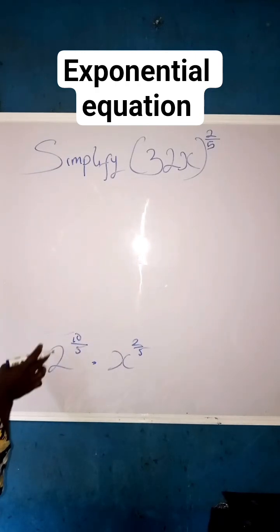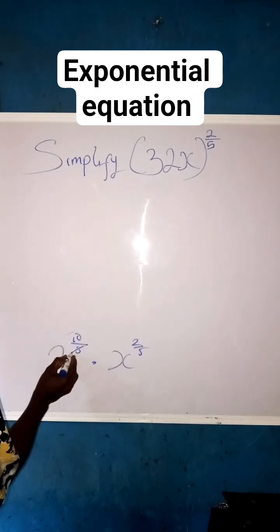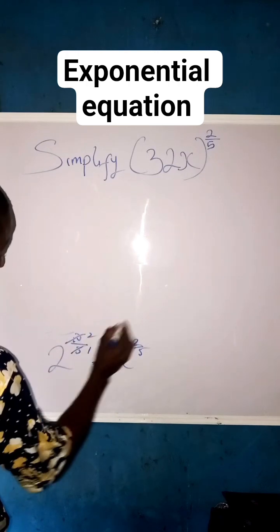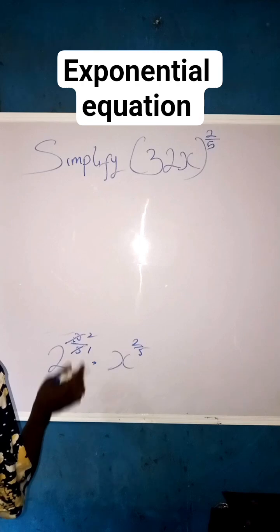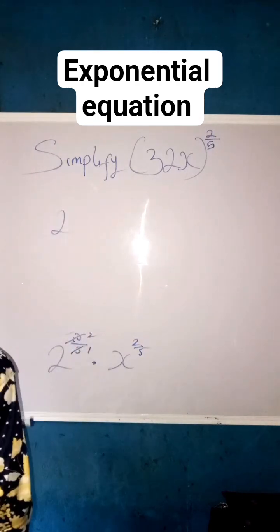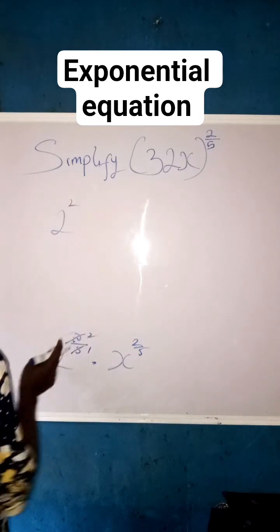We are going to have, remember this is 2 raised to power 10 all over 5. 5 goes into 5 one time, 5 in 10 is 2, right? So what we have here is 2 over 1 is 10, we now have 2 raised to power 2, because 2 over 1 is 2.